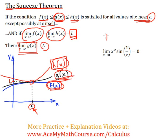So now let's just do a question here. Let's prove that the limit as x approaches 0 for x squared sine 1 over x is equal to 0. So how can we do that?